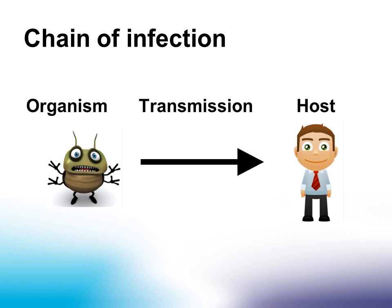The chain of infection is a simplified method of showing how infections are transmitted. Infections occur when there is an organism able to cause disease, it has a way of being transmitted, and is able to enter a susceptible host. If all these factors occur, infection can occur.